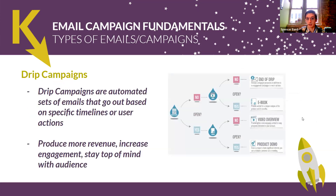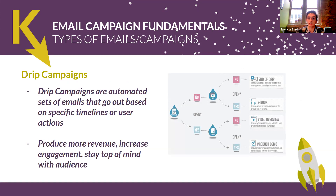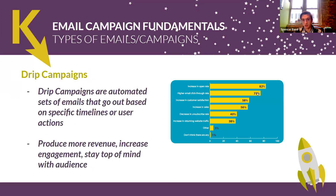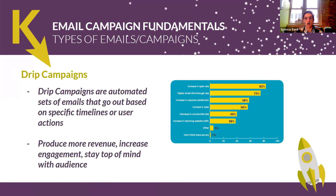Drip campaigns are more focused on a specific offering or with a specific conversion as the end goal. By definition, it's a specific automated set of emails that go out automatically based on either the timeline or the actions of the recipient. It really allows you to produce more personalized content, stay top of mind with consistent touch points, and increase your engagement. Marketers have experienced improved open rates and click-throughs from using drip campaigns to automate their campaigns.